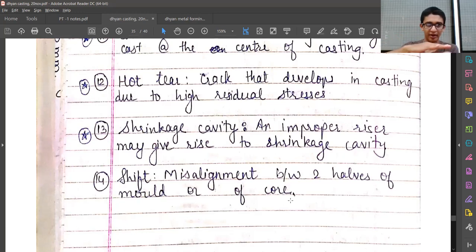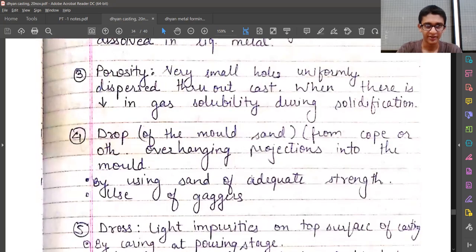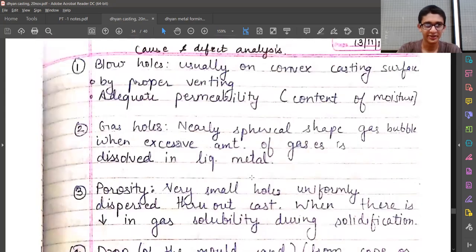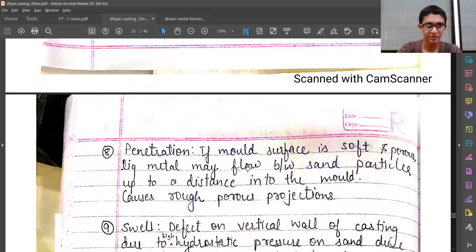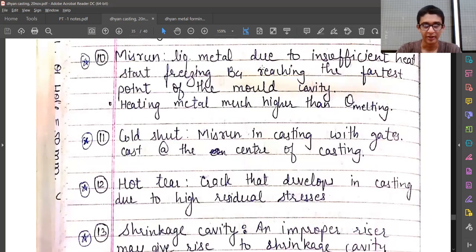So these were the 14 casting defects and some of the possible remedies which I have discussed. If you have any queries, do comment. Thank you.